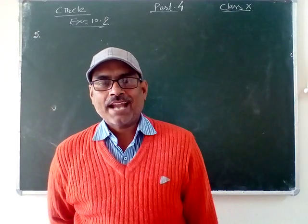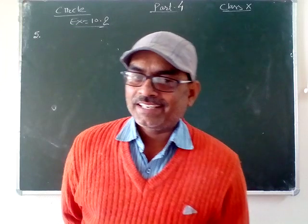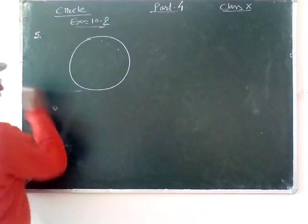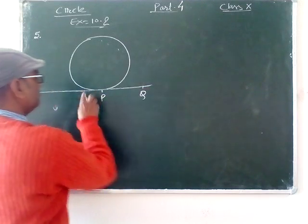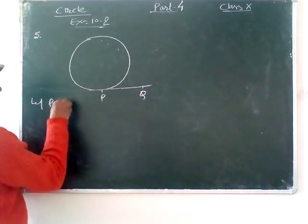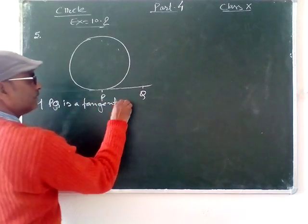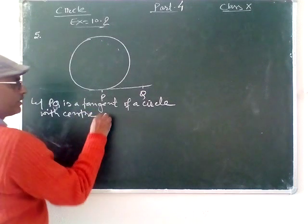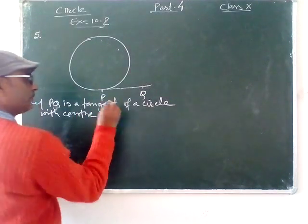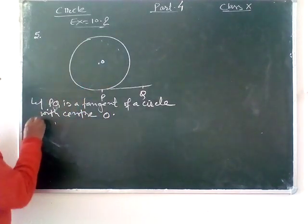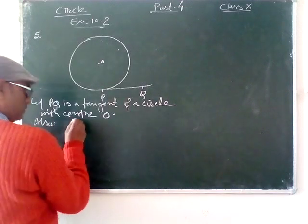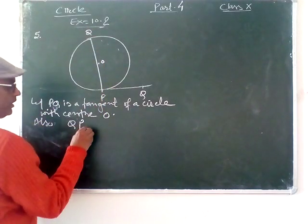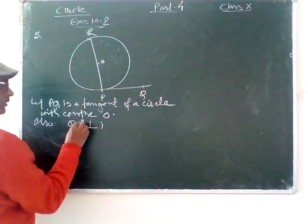Prove that the perpendicular at the end of the point of contact of the tangent to a circle passes through the center. So here we have to suppose that there is a circle with a tangent. Let PQ be a tangent with center O. If P is the point of contact, QR perpendicular to P.